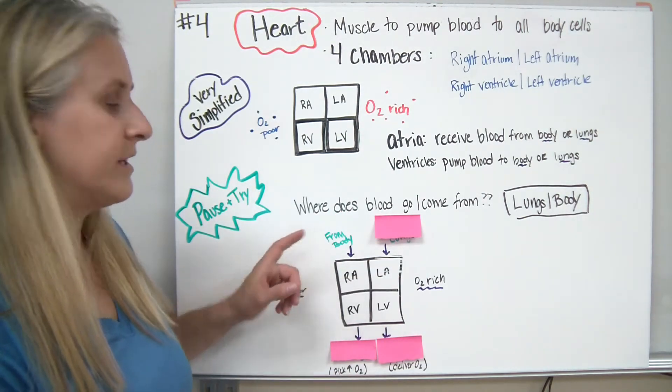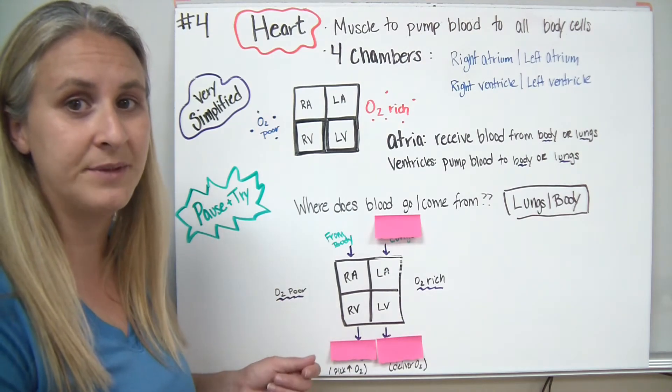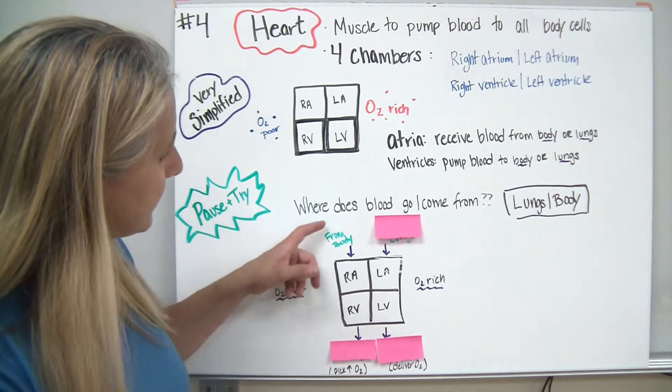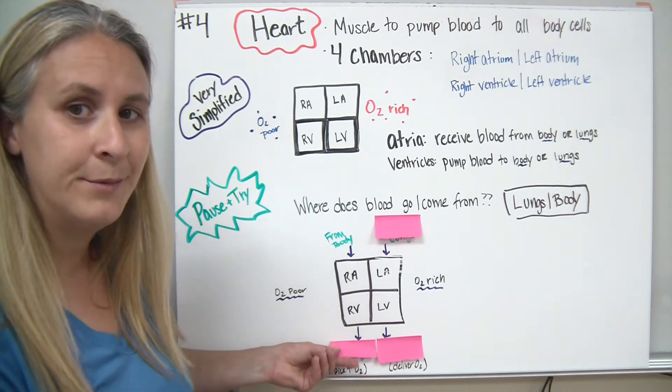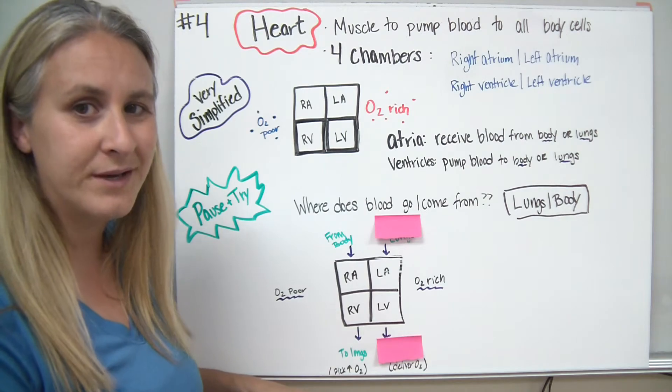So what happens is, the blood is going to come from the body. It's very poor in oxygen. The cells have already picked up the oxygen, and they've dropped off their carbon dioxide. So the blood comes into the right atrium, gets pumped down into the right ventricle. Being that it's poor in oxygen, it's going to go to the lungs in order to pick up oxygen.